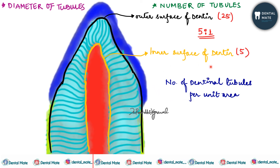The ratio of number of dentinal tubules per unit area is 1 to 4 — meaning if one tubule is present in the outer surface, then four tubules are present in the inner surface. This is because the outer surface is broader and the inner surface is shorter in diameter, so the tubules are compactly packed near the pulp whereas in the peripheral layers they are farther apart.